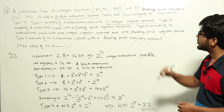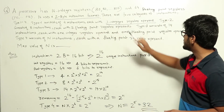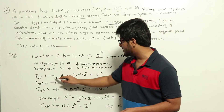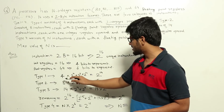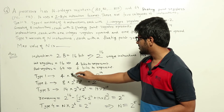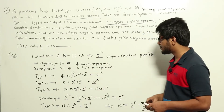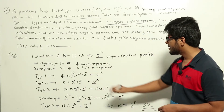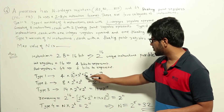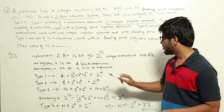For type 1, with four instructions and three integer register operands, the total number of type 1 instructions is 4 into 2 power 4 into 2 power 4 into 2 power 4, which equals 2 power 14.